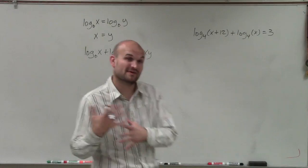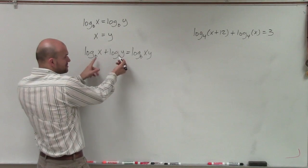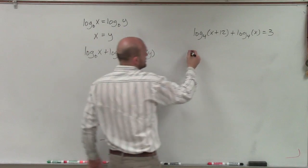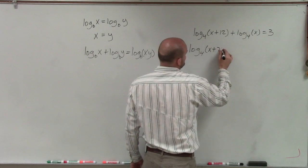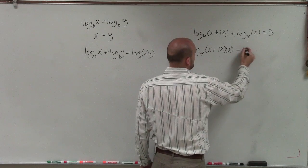We have another problem where we're going to apply our properties of logarithms. Remember, when we have the addition of two logarithms with the same base, we can rewrite that as the product of one logarithm. Therefore, I can rewrite this as log base 4 of (x + 12) times x equals 3.